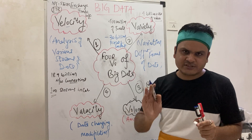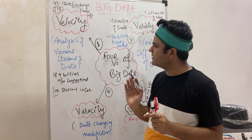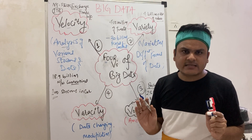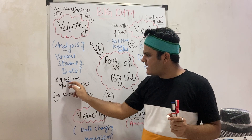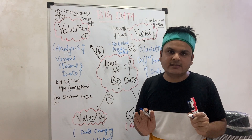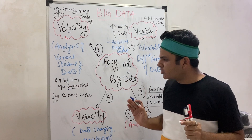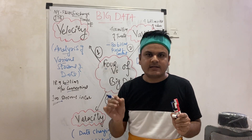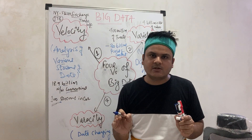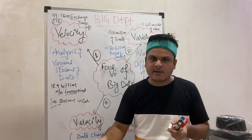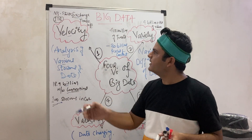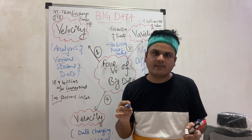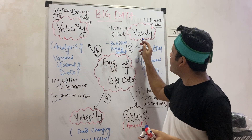Starting with velocity — the first V — it is completely dependent on the analysis of various streams of data. In today's era, 18.9 billion network connections currently exist around the globe. If you observe a single Tesla car, it has 100-plus sensors to check fuel level, air pressure in tires, and more. If you talk about the New York Stock Exchange, one terabyte of data is generated daily.